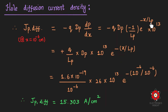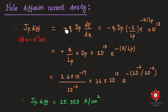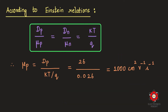Substituting all values — with x/Lp = 10⁻⁶/10⁻⁶ = 1, so the exponential term is simply e⁻¹ — the final hole diffusion current density works out to 15.303 amperes per centimeter squared. If the cross-sectional area of the semiconductor is also given, we can multiply by it to find the total current.